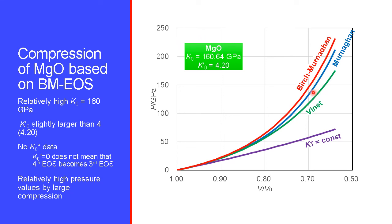Nevertheless, for MgO, the pressure values given by Birch-Murnaghan and Murnaghan's equations of state are almost the same, and these pressures are higher than those given by Vinet's equation of state, and much higher than the pressure obtained by assuming KT is constant.